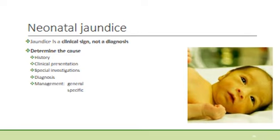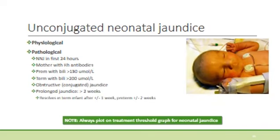Once a baby presents with neonatal jaundice, all efforts should be made to make a specific diagnosis, requiring a good history, thorough clinical examination, special investigations, and then management — either general or specific to the cause. Unconjugated neonatal jaundice can be divided into physiological or pathological jaundice. Physiological jaundice is a diagnosis of exclusion — a thriving baby with no specific cause, and these patients usually do not need intervention as levels do not cross the phototherapy threshold.